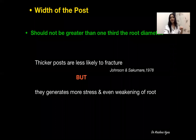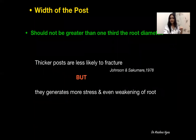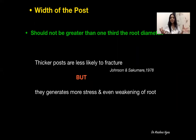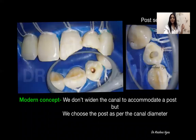The other issue is about post width — how much should the ideal width be? When we use a thicker post, it is less likely to fracture, but at the same time it generates more stress on the roots and weakens the root due to greater post space preparation diameter. Always remember the width should not be greater than one-third of the root diameter. The modern concept is we don't widen the canals to accommodate a post; instead, we choose a post as per the canal diameter.